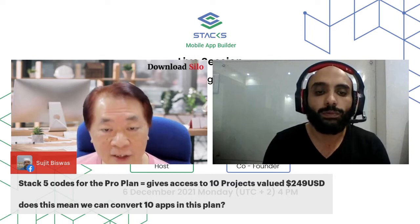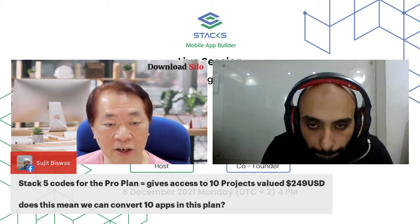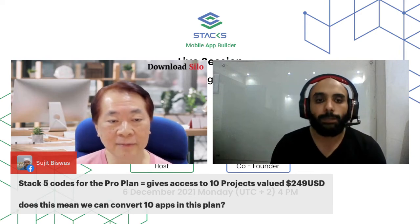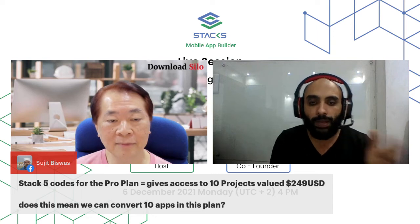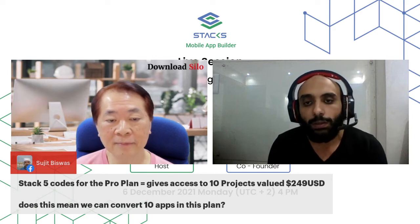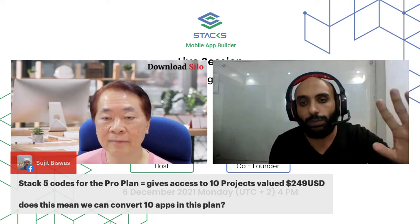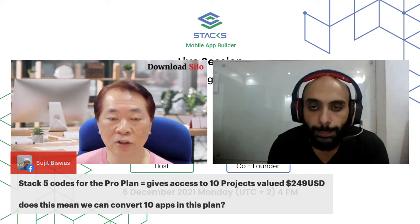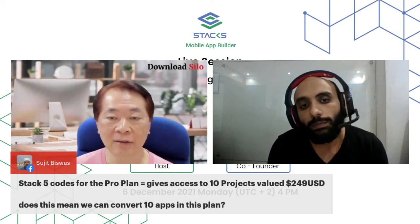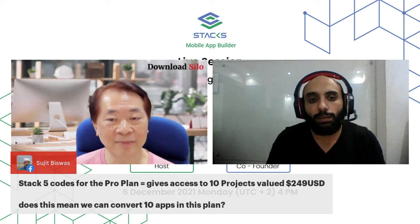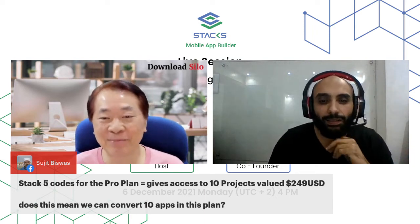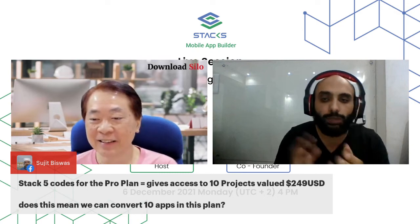If somebody stacks five codes and gets 10 projects — does that mean we can build 10 apps? Yes, exactly — you can build 10 apps. The 10 projects each allow you to build Android and iOS. Each project is connected to a single website that can have both Android and iOS. So one project is one app — Android and iOS — just different platforms but the same project.